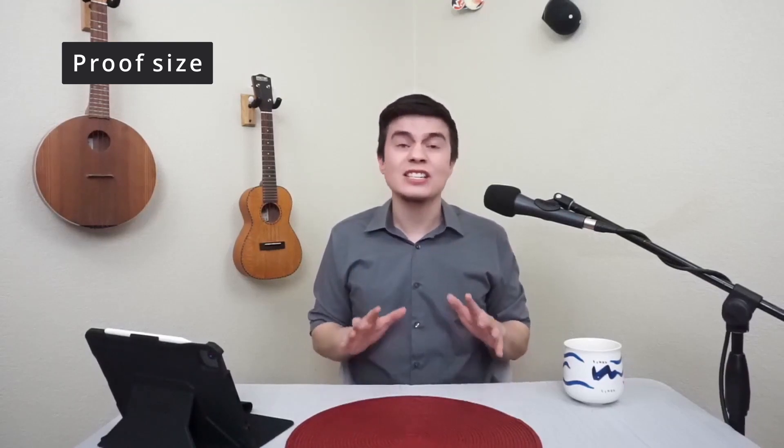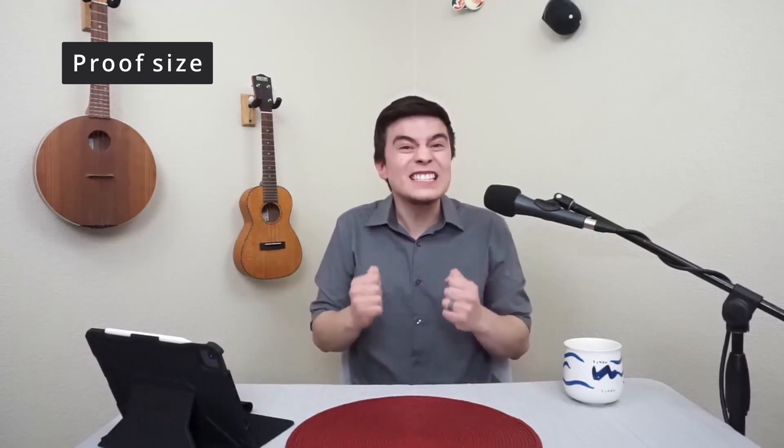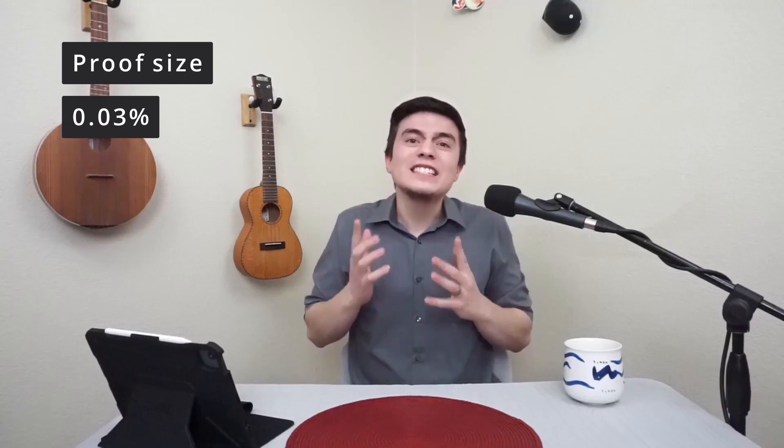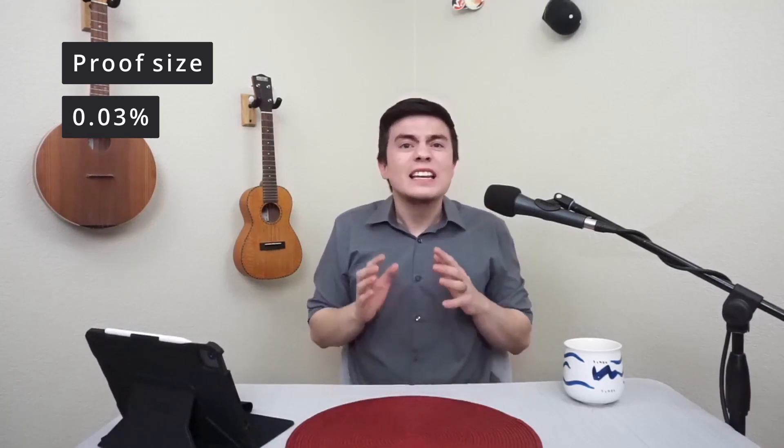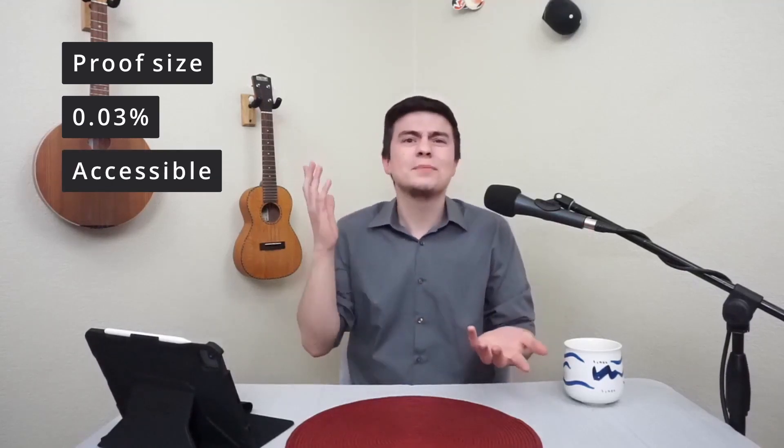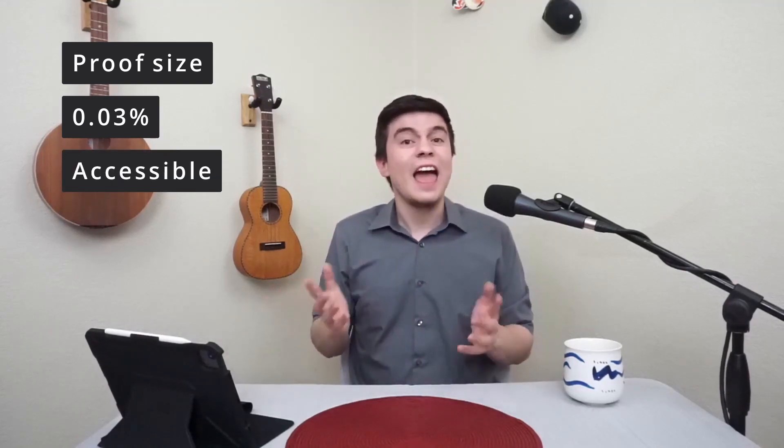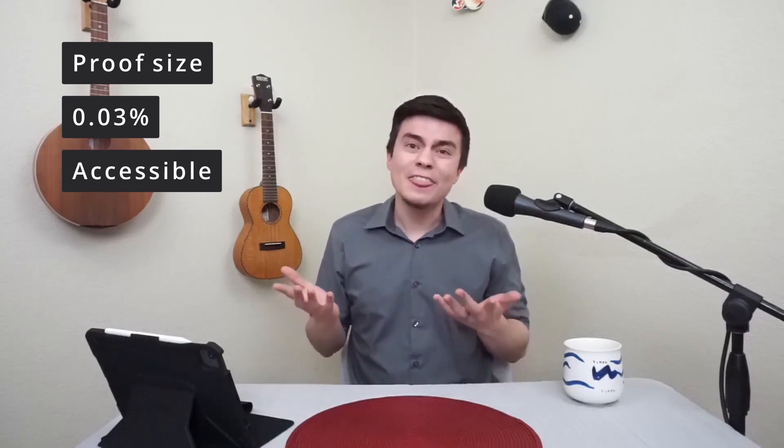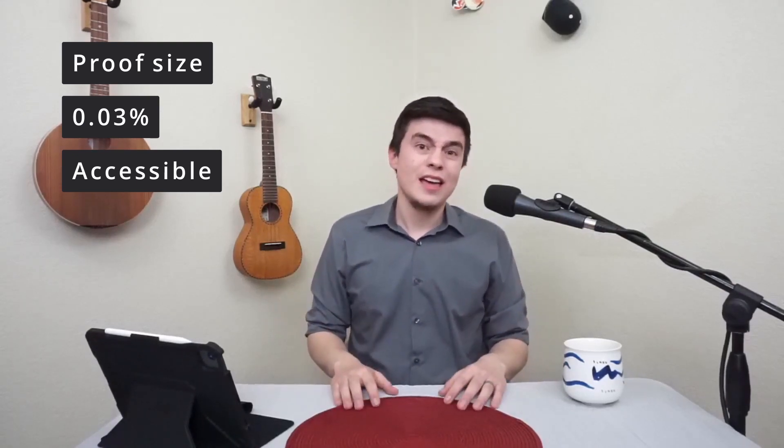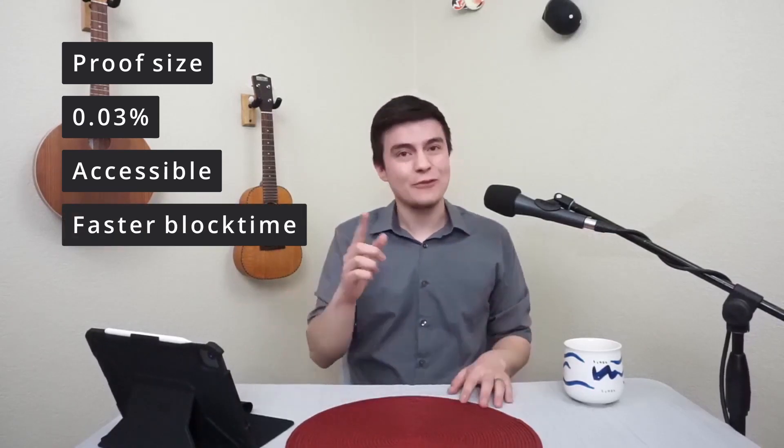And of course, you can't talk about ProgPow without talking about the proof size. MTP proofs are about 200 kilobytes, which bloat the blockchain and add strain to the network. ProgPow, on the other hand, has a proof size around 64 bytes. That's around 0.03%. This means that in years to come, any newcomer to Firo won't have to worry about downloading some massive blockchain to even use it. And since Firo is a coin for everybody, that's a pretty big deal. It also opens the door to faster block times, if required.